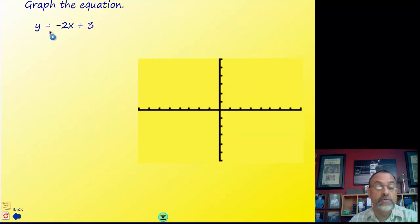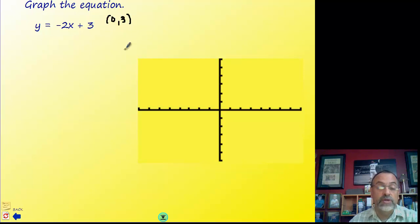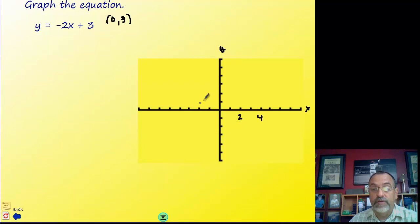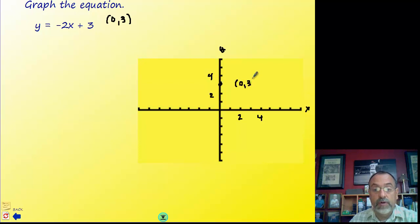Let's graph the equation y equals negative 2x plus 3. We notice that the y-intercept is 3, so that coordinate is going to be (0, 3) — remember the x-coordinate of the y-intercept is always 0. We need to label our axes, give each axis a scale, and then graph the point (0, 3).